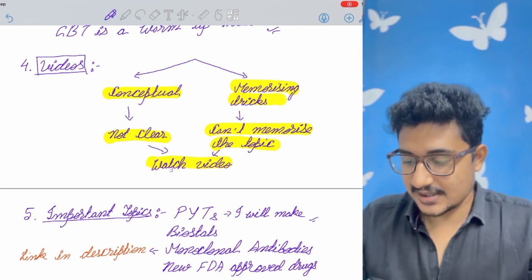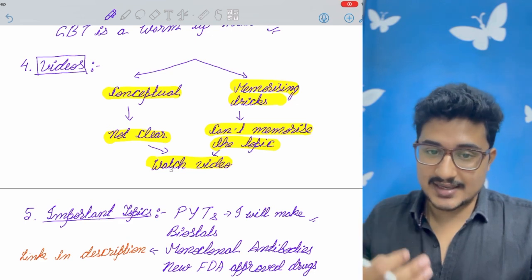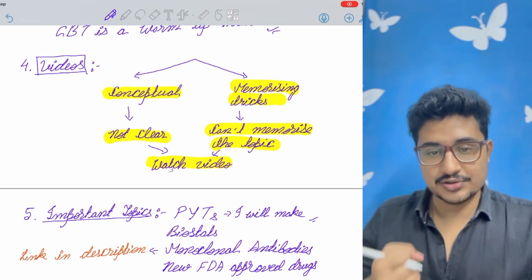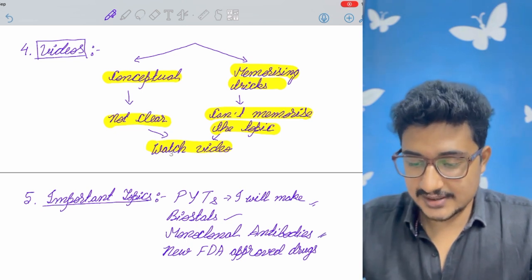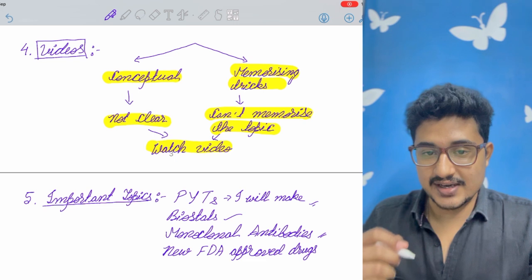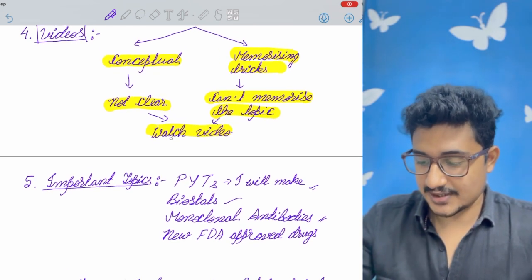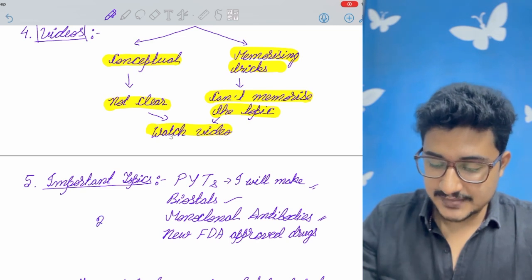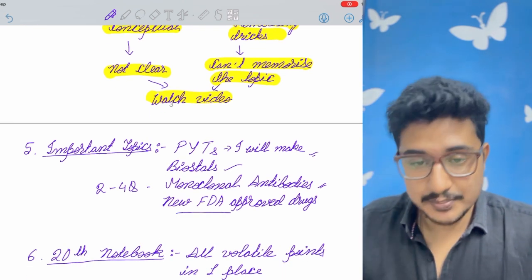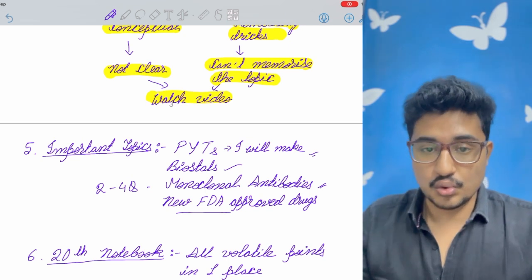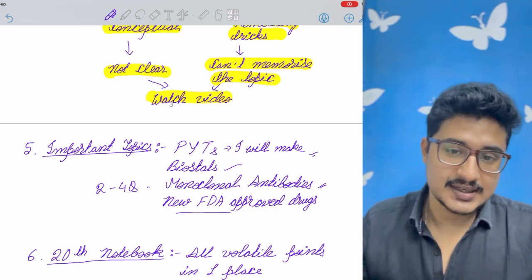Important topics. Important topic list. I would try to make regarding INICET and NEET-PG. A new list. Because this time the INICET May and NEET-PG also happened. So combining those topics I will make a new list. And other important topics are biostatistics. And monoclonal antibodies notes I have not made. So that monoclonal antibodies notes is available on my premium telegram channel. You can join that by clicking the join button just beside the subscribe button. So you will get that monoclonal antibodies notes. Monoclonal antibodies usually two to four questions are asked every year. So it is a very much high yielding. Another important topic is the new FDA approved drugs.